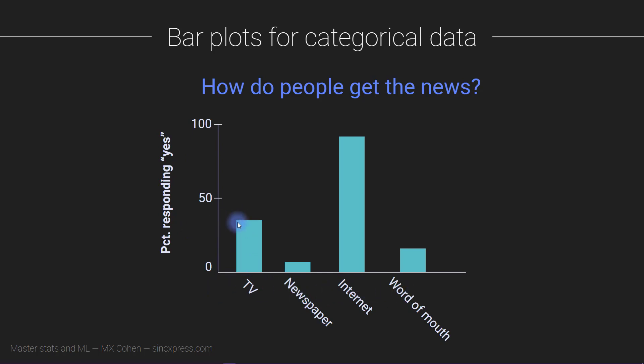So we get 40 percent of people get their news from TV and so on. By the way these are just all made up numbers here. I didn't actually do this survey, this is just for illustration purposes. These are categorical data and we use bar plots to visualize them.